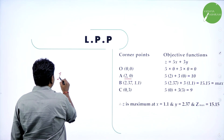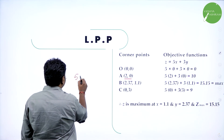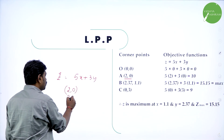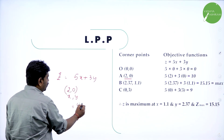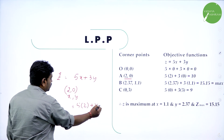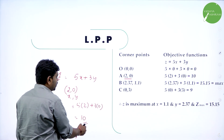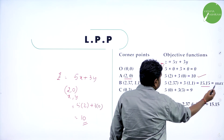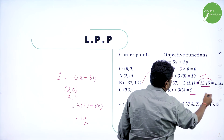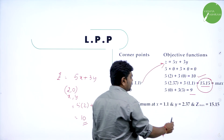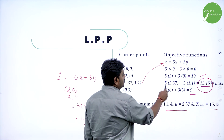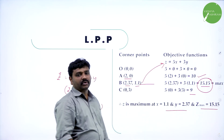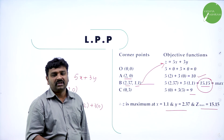Substitute the corner points into Z. Z = 5x + 3y. At (0,0): Z = 0. At (2,0): Z = 5×2 + 3×0 = 10. Substituting all corner points, the maximum value is Z = 15.15, occurring at x ≈ 2.37, y ≈ 1.1. This is how we solve this type of problem.